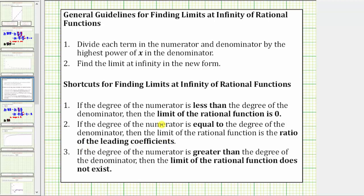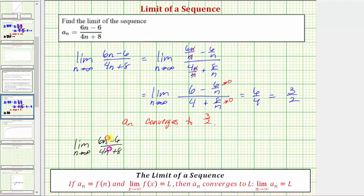The other two cases are: if the degree of the numerator is less than the degree of the denominator, the limit is equal to zero; and if the degree of the numerator is greater than the degree of the denominator, the limit does not exist. But because we have the same degree in the numerator and denominator, the limit equals the ratio of the leading coefficients, which is six over four, or six fourths, which simplifies to three halves.